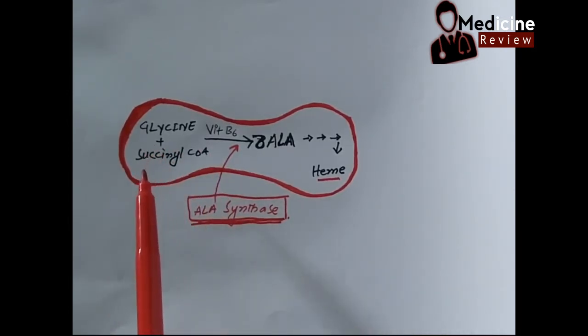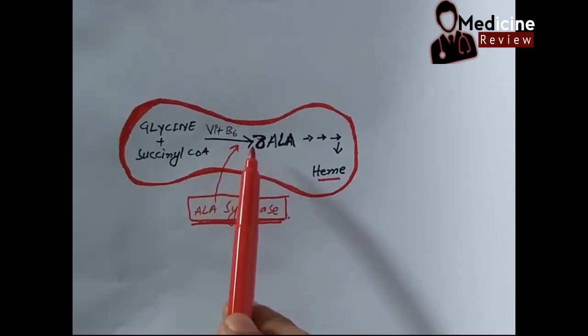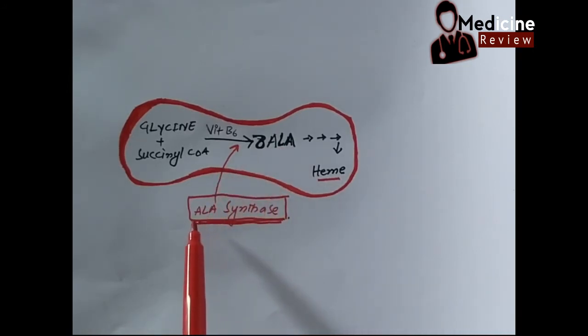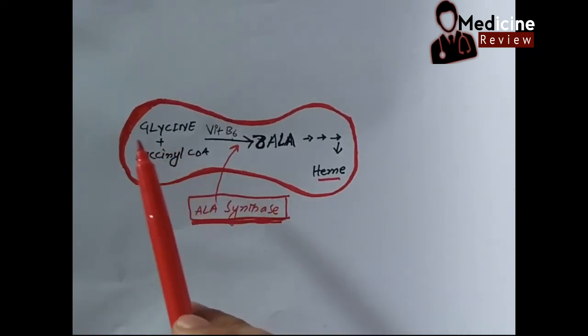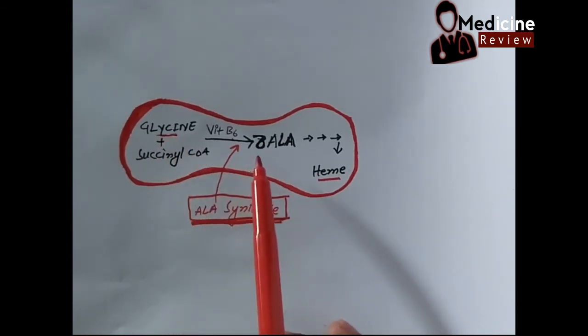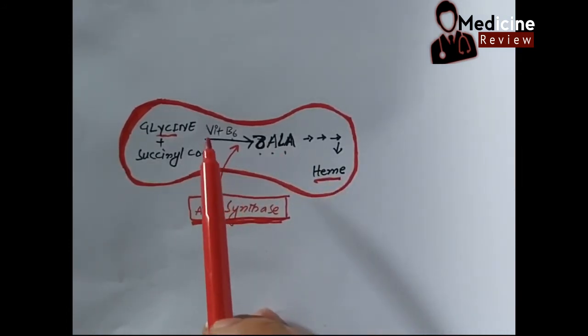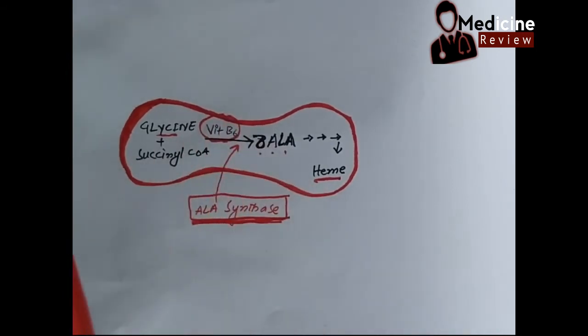When glycine combined with succinyl-CoA, they combine to form delta amino levulinic acid in the presence of vitamin B6 and amino levulinic acid synthase. In some patients or some people, the gene of this enzyme is defective, so the succinyl-CoA plus glycine, when combined, cannot form delta amino levulinic acid, so heme cannot be formed.